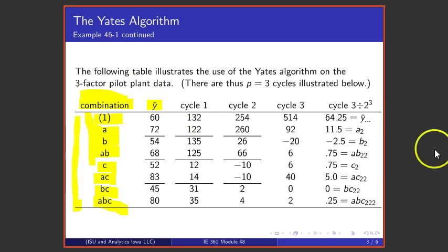Then one lists the corresponding Y bars. And so here are the Y bars for this Box Hunter and Hunter pilot plant example. And what one does is go to work on those Y bars, doing additions and subtractions in pairs. So if I add, first of all, in pairs, 60 and 72 is 132, 54 and 68 added together is 122, 52 and 83 added together is 135, 45 and 80 added together is 125. So I'm going to do additions and subtractions in pairs. I've just done all the additions for that column of Y bars.